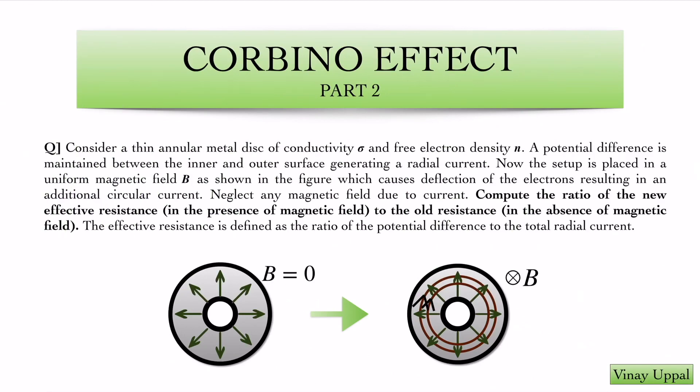I am back with part 2 of the Corbino effect, which was about Ohm's law in a magnetic field and how current gets deflected. In this part, we are going to be talking about the resistance and how it changes due to the presence of a magnetic field.